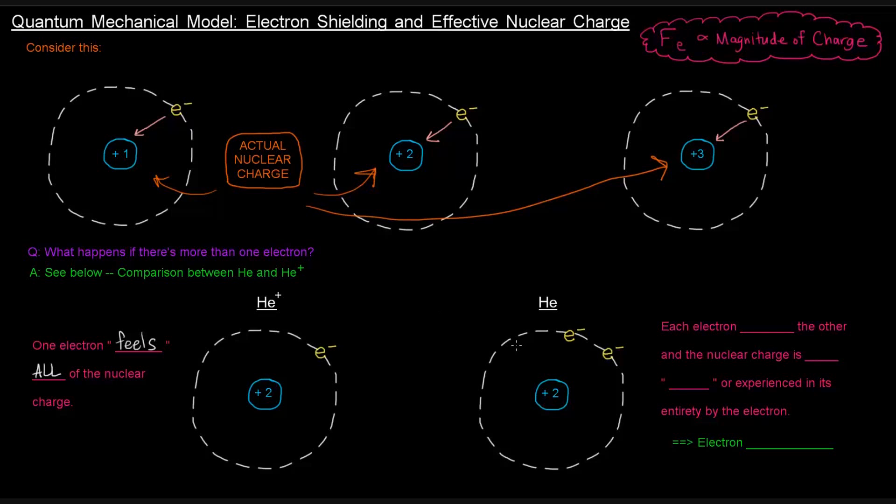When there's more than one electron, though, that kind of changes. You can imagine, and you might already be thinking, why are these two electrons so close to each other? Shouldn't they repel? The answer is yes, they should repel.